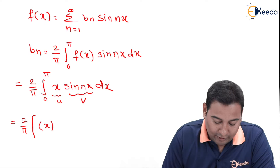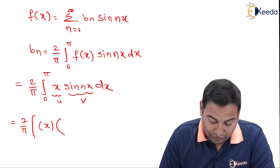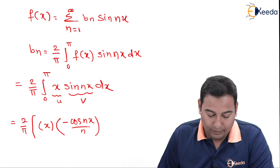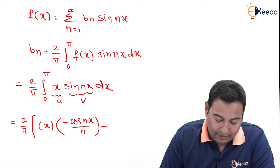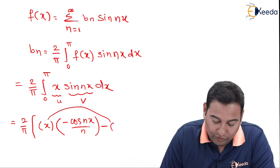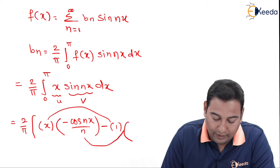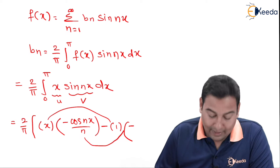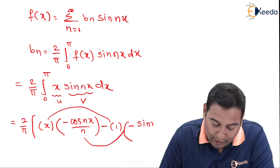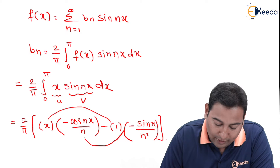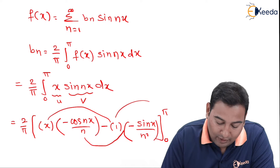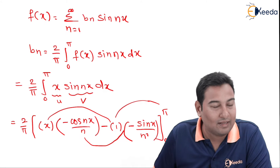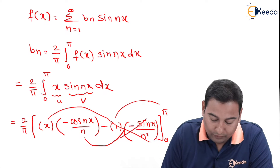u as it is, sin(nx) integration gives minus cos(nx) upon n. Minus — x derivative is 1 — integration of this term: minus constant, cos(nx) integration is sin(nx) upon n squared. No need to go ahead because one more derivative will be 0. Use brackets properly — that's done. The sin(nx) terms cancel out and will be gone.